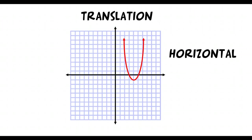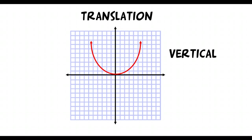We also see translations. Here's your beginning function, and if we apply a horizontal translation, that means it's going to only move left to right. In this case, we have a horizontal translation — it's moving left. Every single point is moving the exact same distance to the left. We can also have vertical translations as well, where we translate a parabola up the same amount of units for every single point.